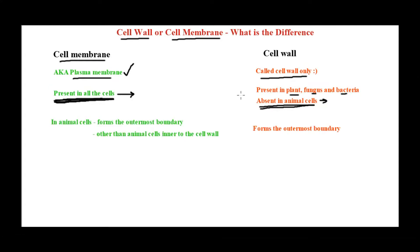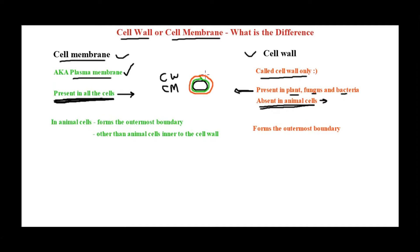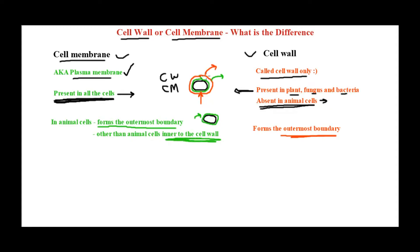Other than animal cells, all other cells have both cell membrane and cell wall. If you visualize it, the cell membrane is present first, and then after the cell membrane is the cell wall. So the cell wall is the outermost boundary in those cells, but not for animal cells, since animal cells do not have a cell wall. For animal cells, the outermost boundary is the plasma membrane. The cell membrane is inner to the cell wall.